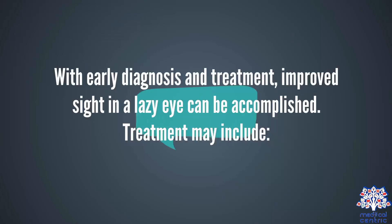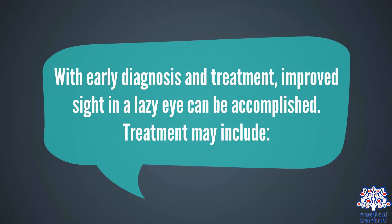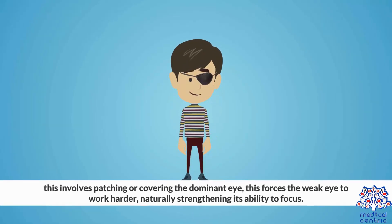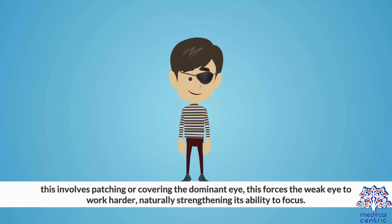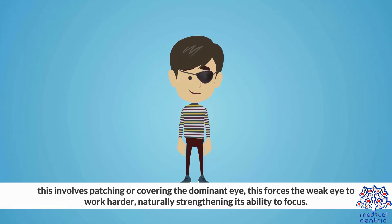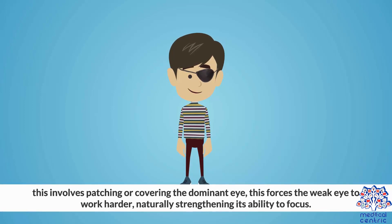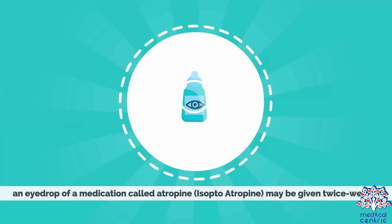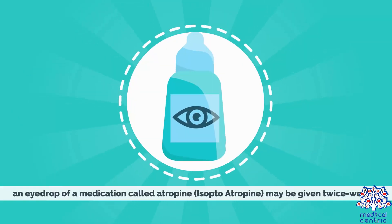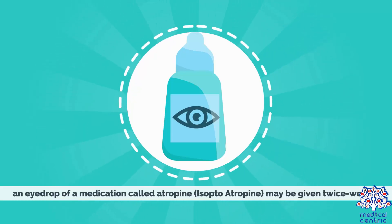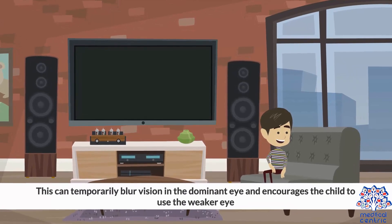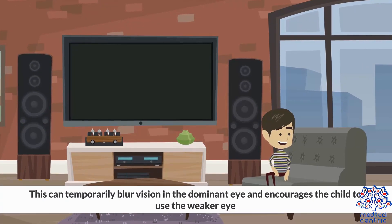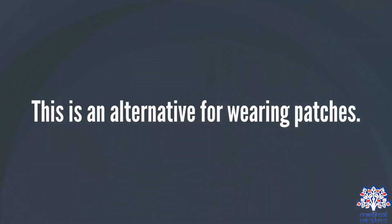Treatment: With early diagnosis and treatment, improved sight in a lazy eye can be accomplished. Eye patches: This involves patching or covering the dominant eye, forcing the weak eye to work harder and naturally strengthening its ability to focus. Eye drops: A drop of a medication called atropine may be given twice weekly. This can temporarily blur vision in the dominant eye and encourages the child to use the weaker eye, as an alternative to wearing patches.